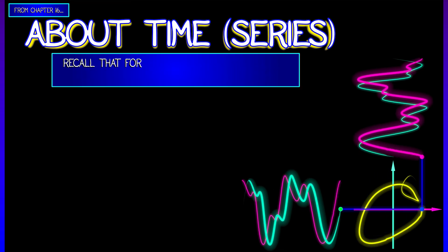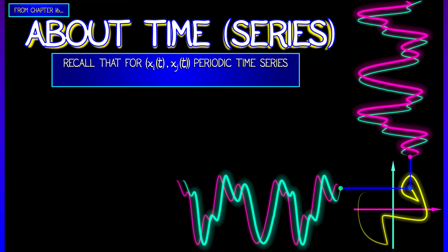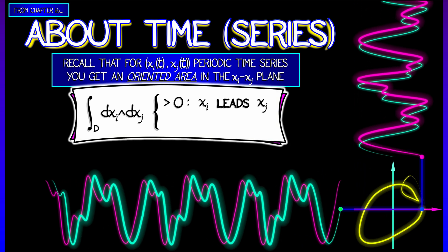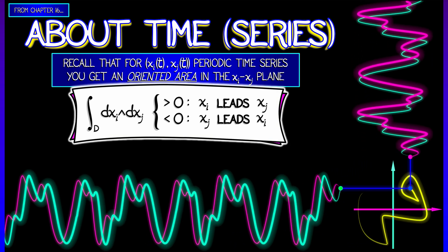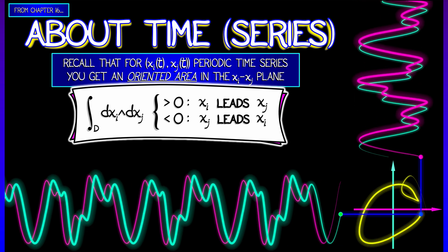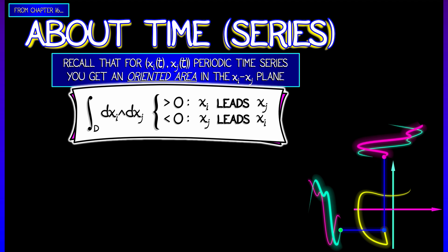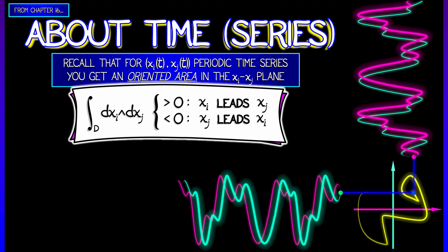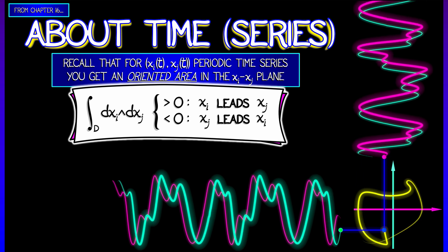So let's think about time series. Remember how that worked. Recall that we had a bunch of periodic time series signals, and what we did was we took a pair of them, xi and xj, and looked at the region d that they traced out in the plane. If you integrate the two-form, dxi wedged dxj, then that tells you about leading or lagging.